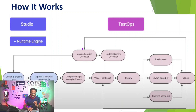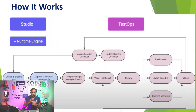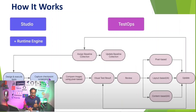First, you need to assign your baseline collection. In TestOps, you baseline your screenshots for each page — capturing the page layouts. Then you start designing your visual testing in Katalon Studio. While designing, you capture checkpoint screenshots, and when you execute your test cases, those checkpoint screenshots are compared against your baseline collection.